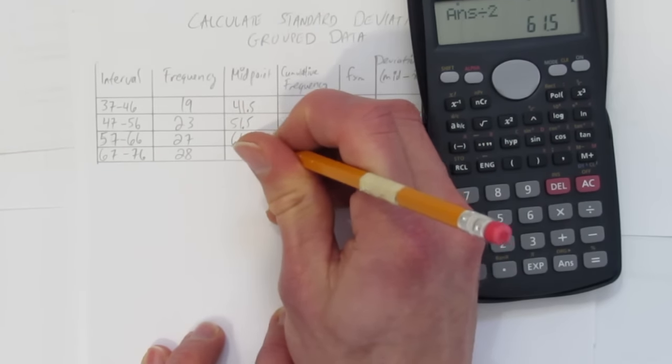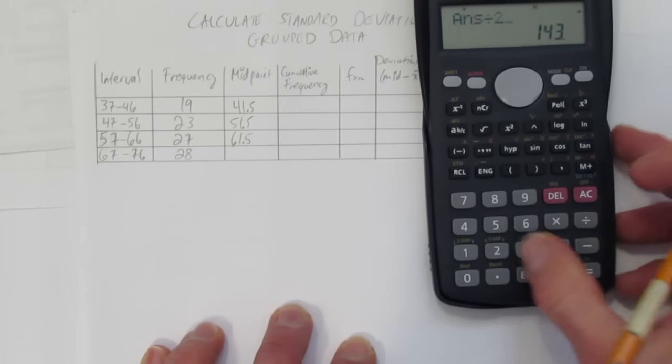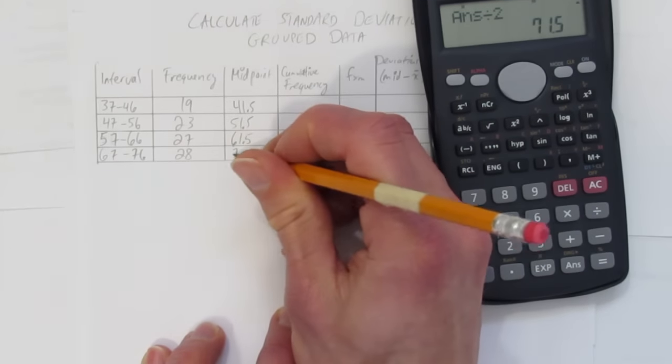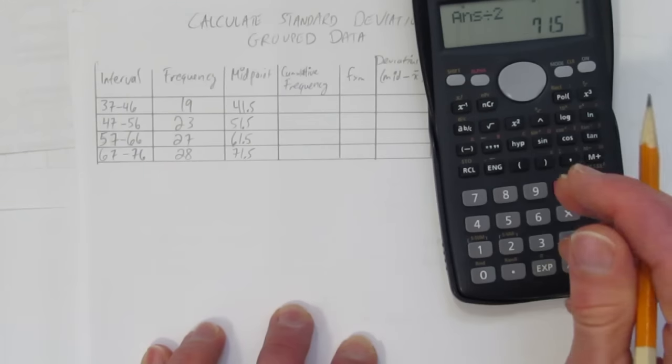As long as your intervals are evenly spaced, the pattern should hold. Sure enough, I get 71.5. Okay, that's done.